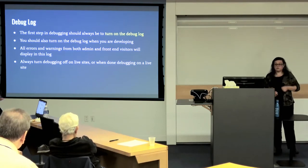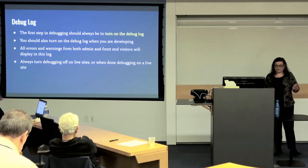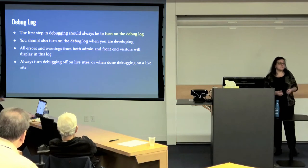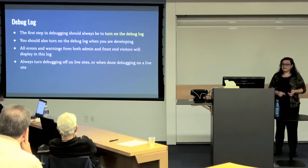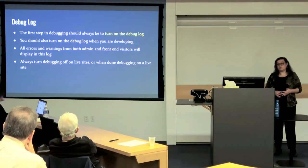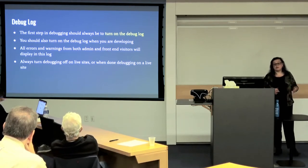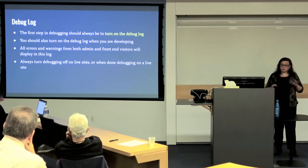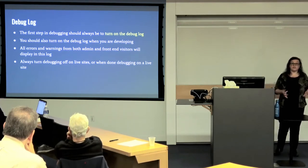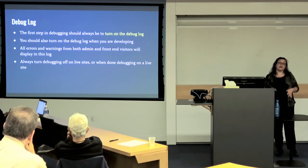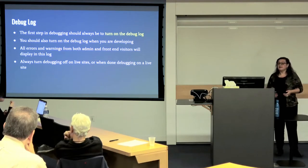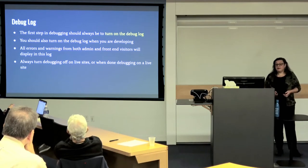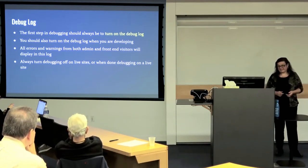Anytime you have a bug in WordPress, my first recommendation is always to turn on the debug log. You should also turn it on if you're developing, because you probably have errors in there you haven't uncovered yet. When you do this, all errors and warnings from your PHP code are going to display in this log. All of WordPress, themes, and plugins are largely made up of PHP code. The new Gutenberg block stuff has more React JavaScript, but the traditional core of WordPress and most themes and plugins today are largely PHP.